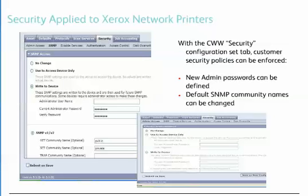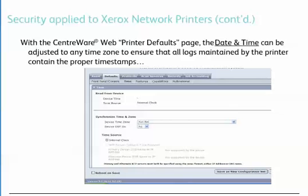With the Centerware Web security configuration set tab, customer security policies can be enforced. New admin passwords can be defined, default SNMP community names can be changed, and local consoles can be secured from unauthorized use. With the Centerware Web printer defaults page, the date and time can be adjusted to any time zone to ensure that all logs maintained by the printer contain the proper time stamps. You also have a number of choices for the source of the time.